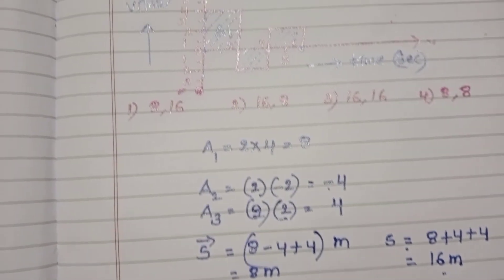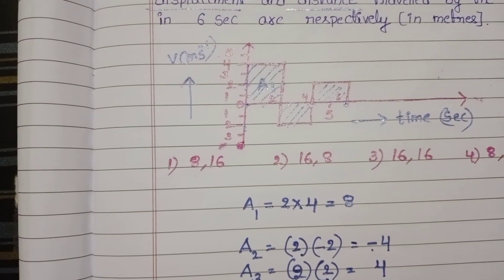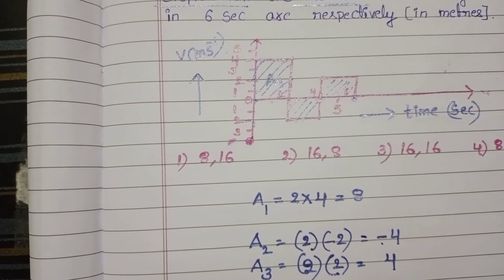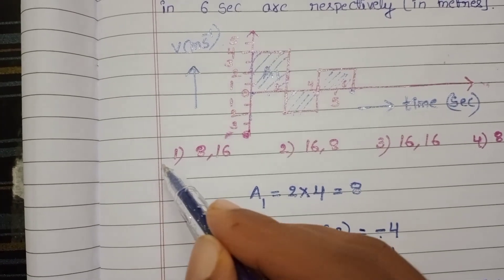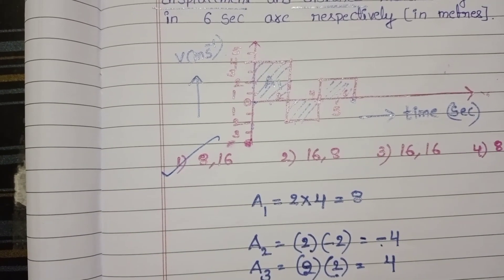Checking the given options: 8 comma 16 — so the first option is correct.